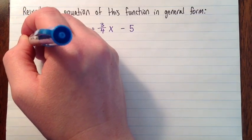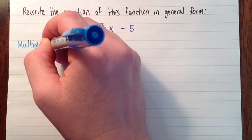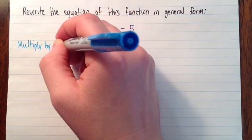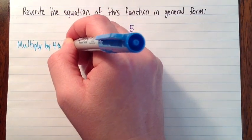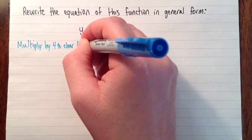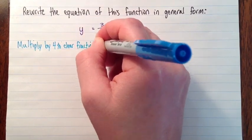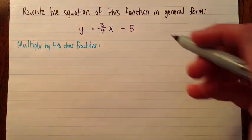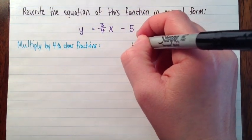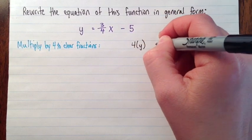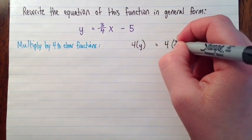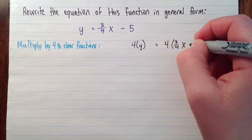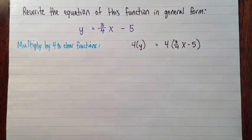So we multiply by 4 to clear the fractions. So we just take what we've got: 4 times y equals 4 times 3 quarters x minus 5.